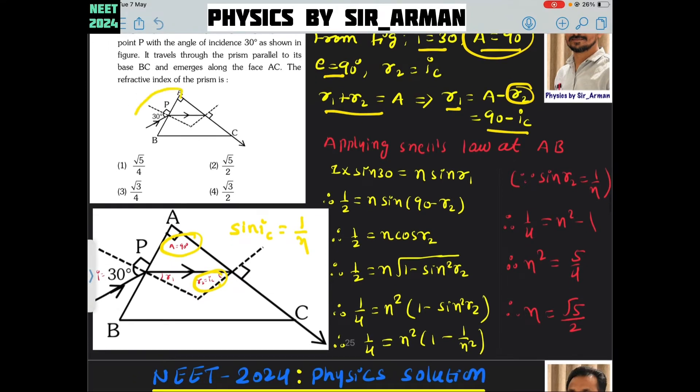We are applying Snell's law to this first surface, that is surface AB. Snell's law is n1 sine theta1 equals n2 sine theta2. n1 is air, so for air we are writing 1 and angle of incidence is 30. Sine 30 is 1 by 2 equals n the refractive index of the prism times sine r1.